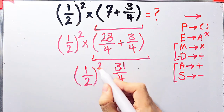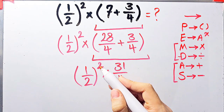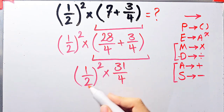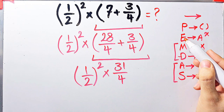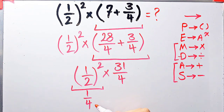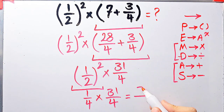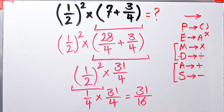Now the question is one over two to the power of two, times thirty-one over four. We have exponent and multiplication. First we simplify the exponent, since it has higher priority. One over two to the power of two equals one over four. Now we have one over four times thirty-one over four, which equals thirty-one over sixteen. The final answer of this question equals 31 over 16.